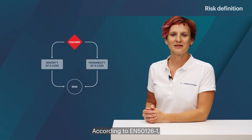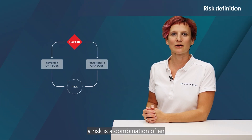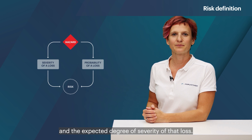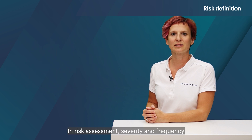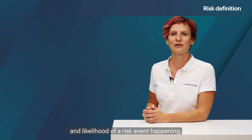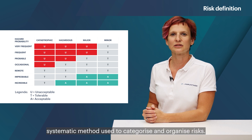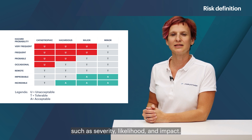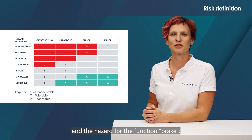According to EN 50126-1, a risk is a combination of an expected probability of a loss and the expected degree of severity of that loss. In risk assessment, severity and frequency are often used to evaluate the potential impact and likelihood of a risk event happening. A risk classification scheme is a systematic method used to categorize and organize risks, based on various attributes such as severity, likelihood and impact.